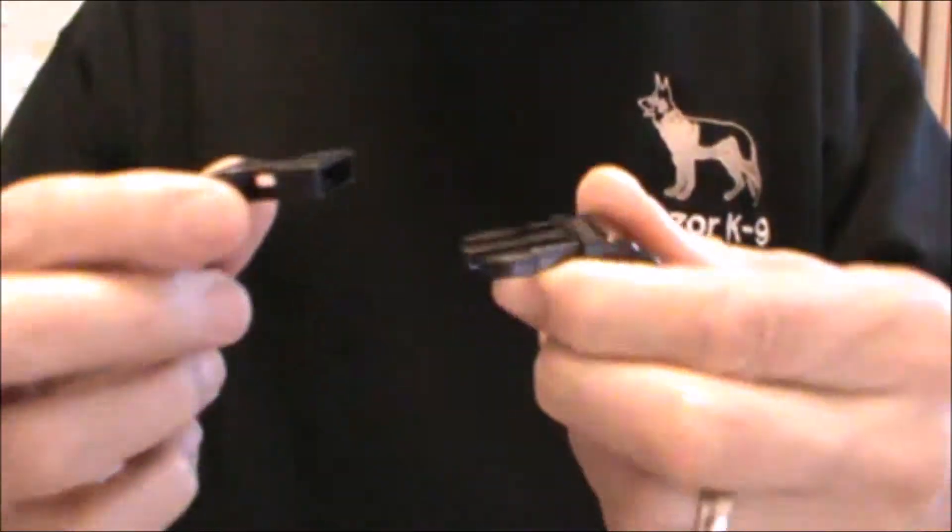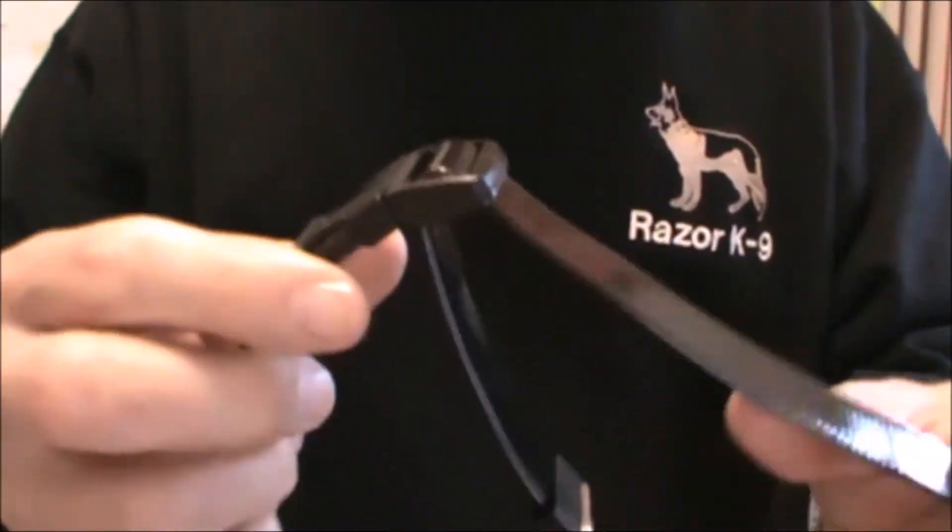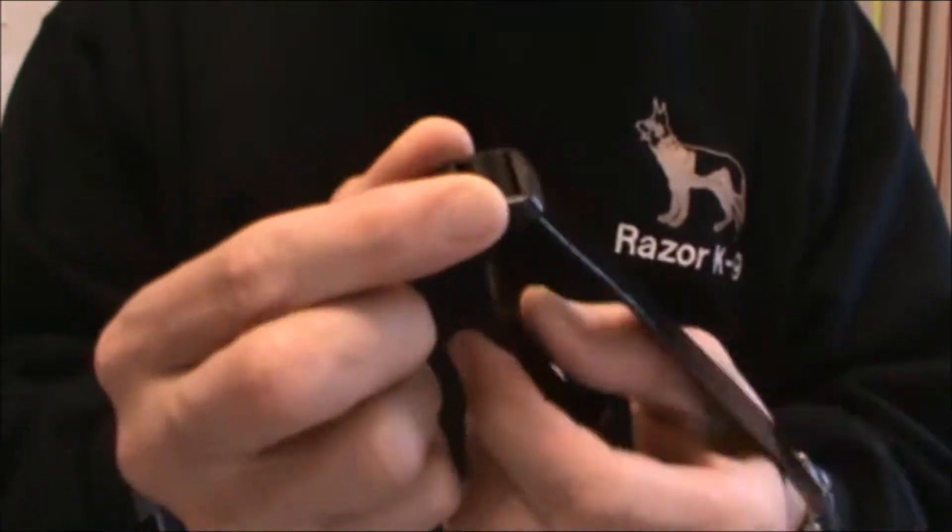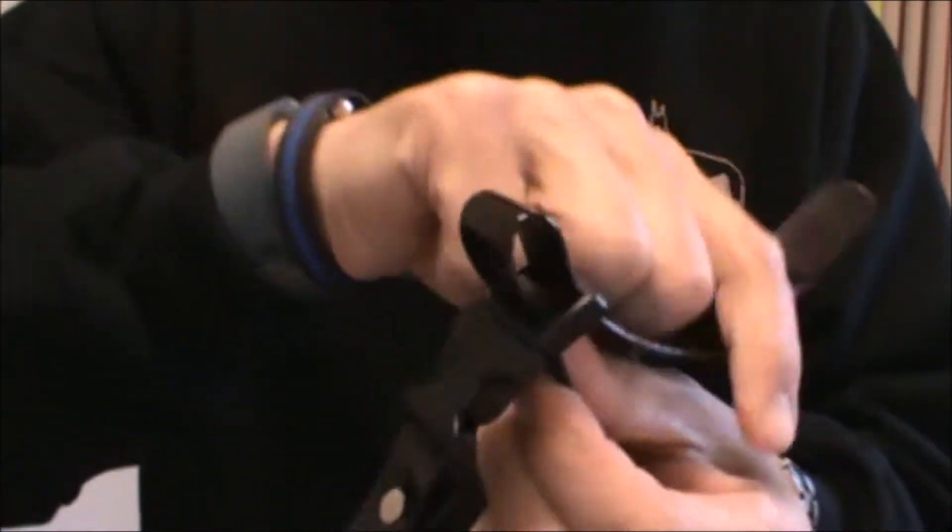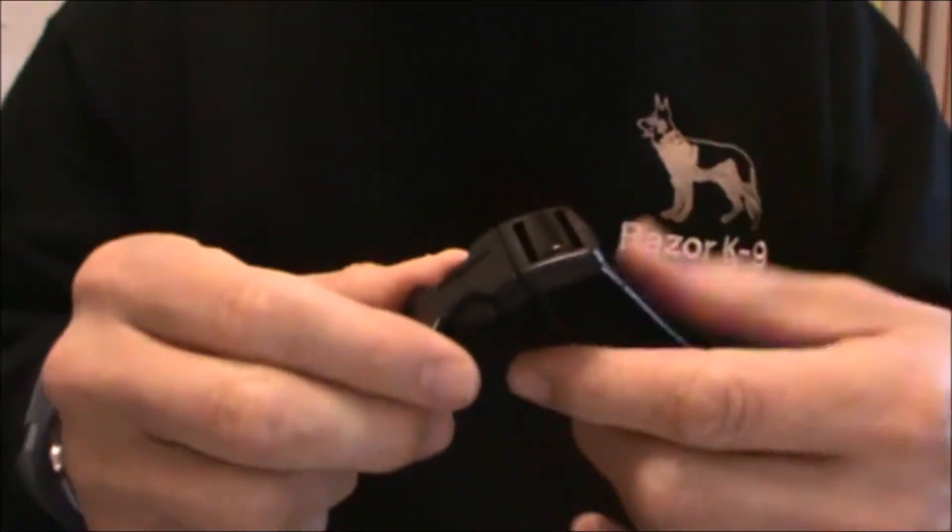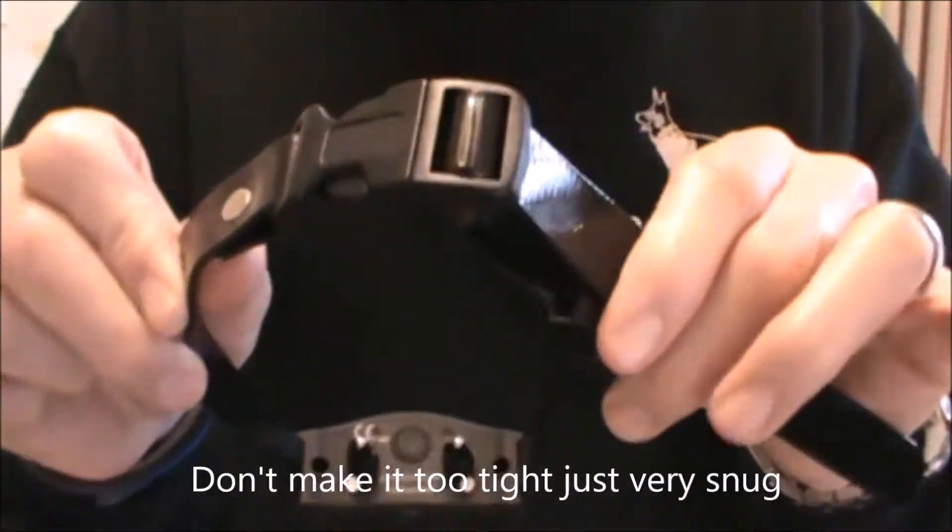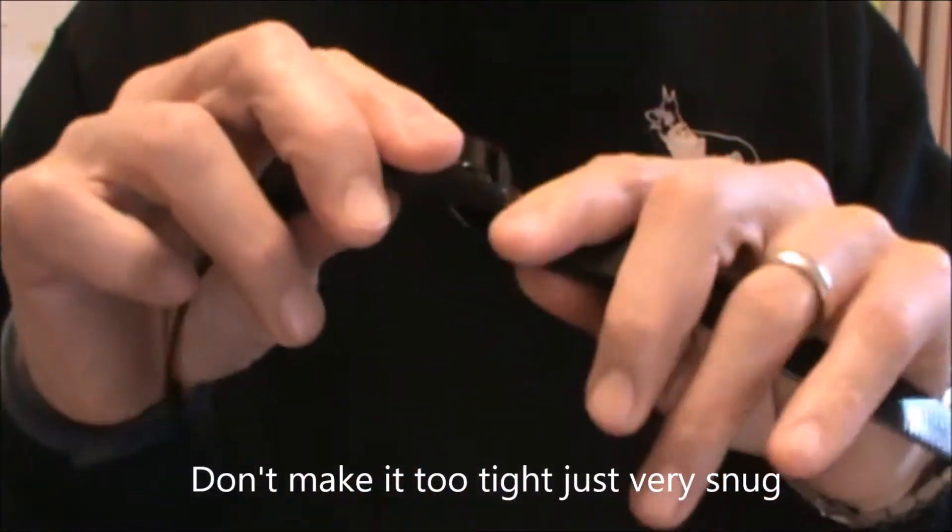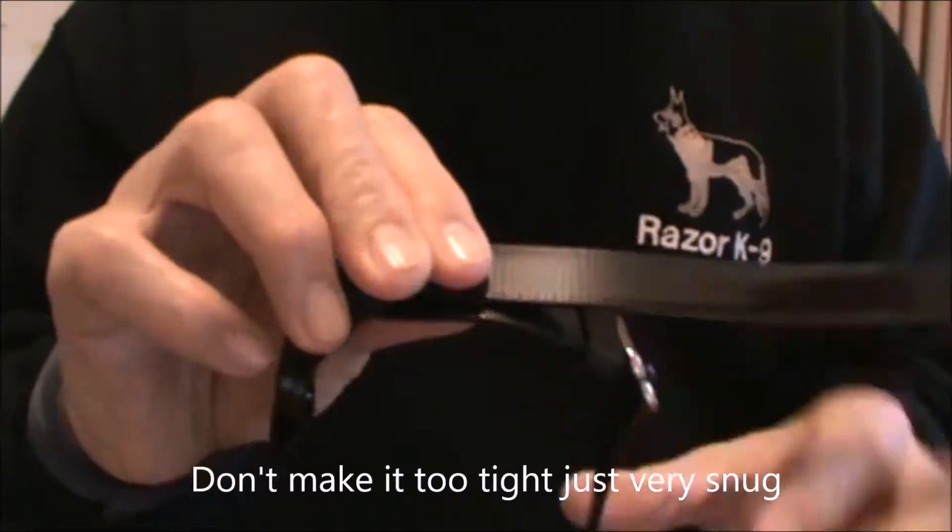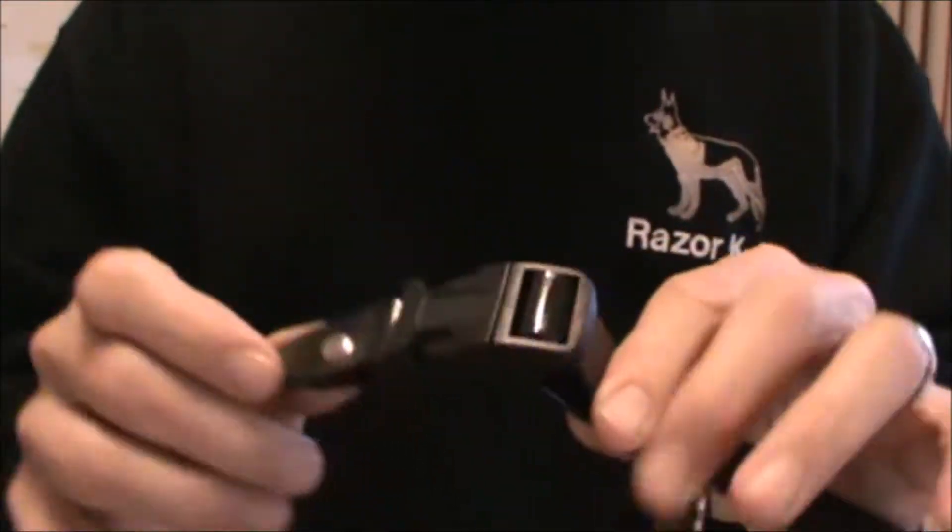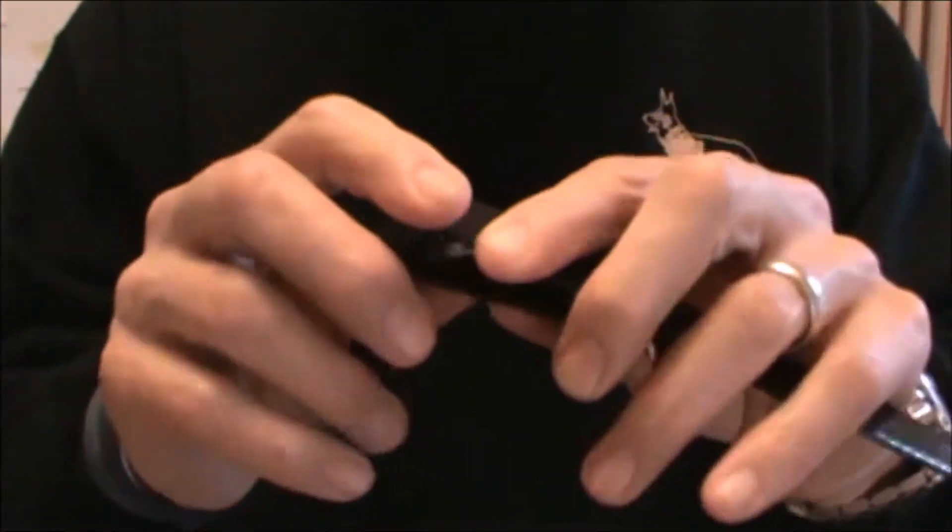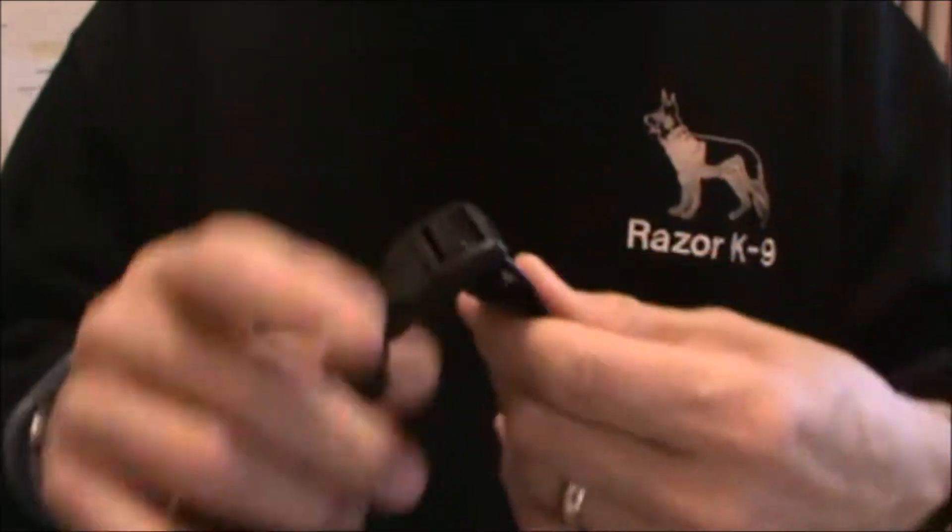Next, you want to put the collar around the dog's neck, clasp it around, and then adjust it if you need to make it a little bit tighter. You pull the material through and tighten it down. You want it pretty firm on the dog's neck so the probes will make contact. Too loose, and it'll move around on the dog's neck, causing irritation, and it also won't work when you're training.